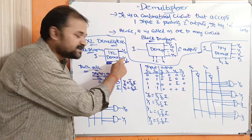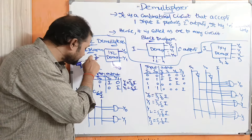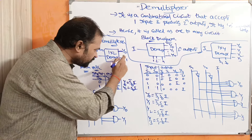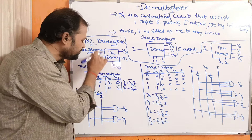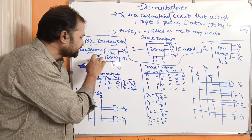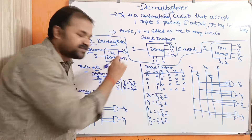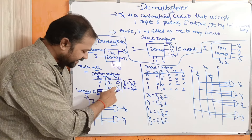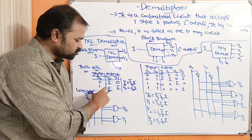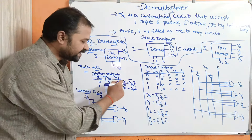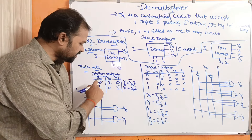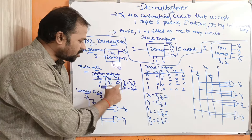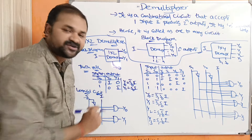If s0 is 1, then the input will be connected to y1, so y1 is displayed as the output, meaning y1 equals i and y0 equals 0. So we can write the boolean expressions as: y0 = s0̄·i and y1 = s0·i.